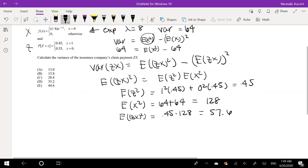Now for the means, because they are independent we can split this up. Expected value of Z is 1 times 0.45 plus 0 times 0.55, which equals 0.45.